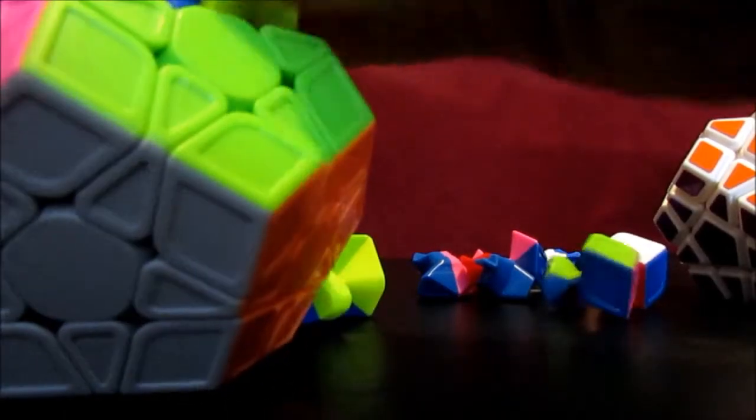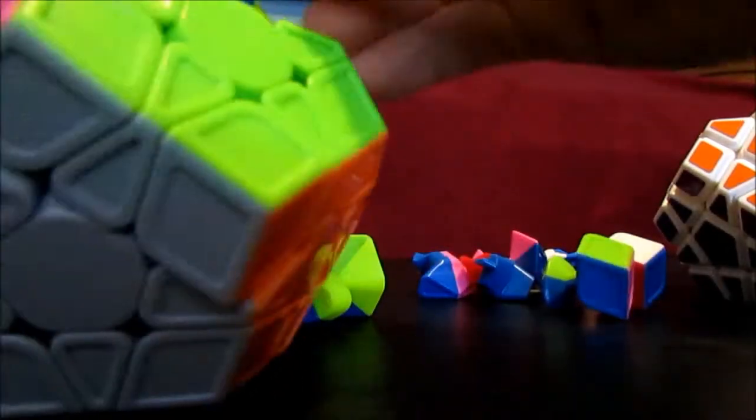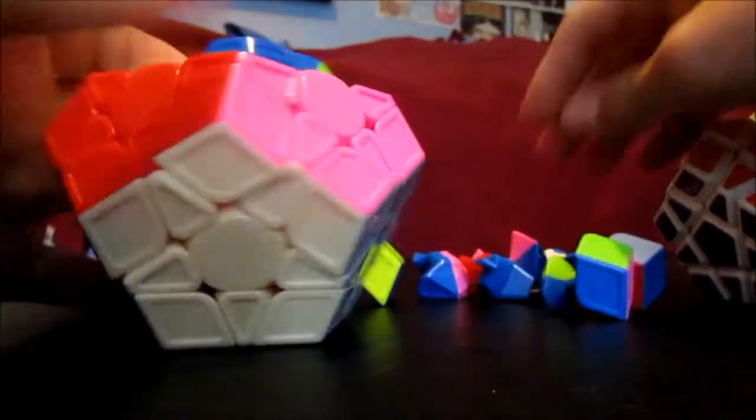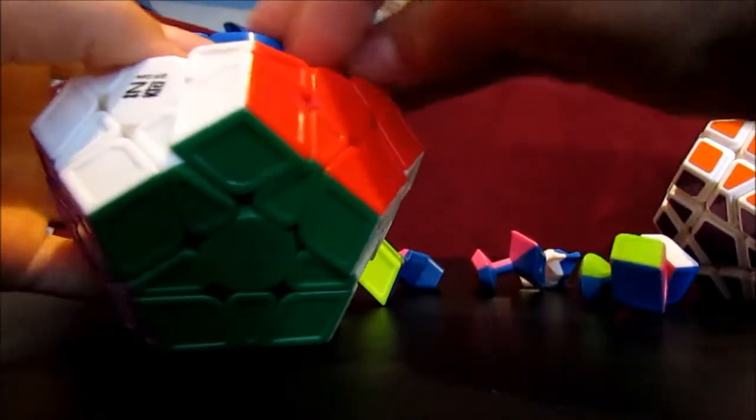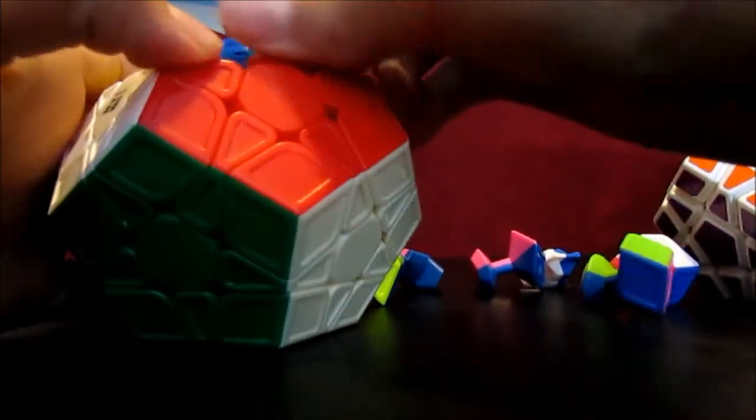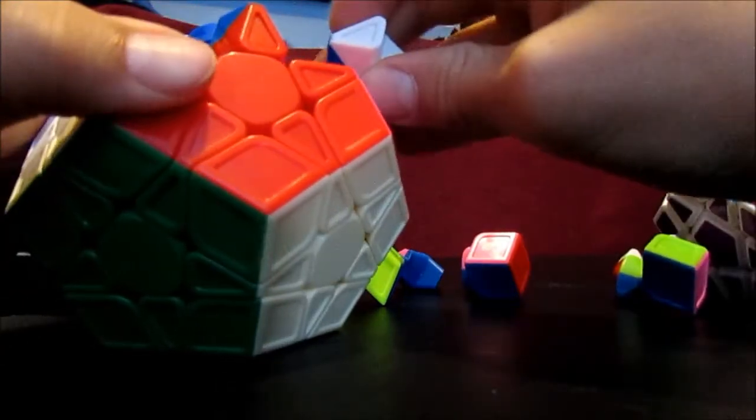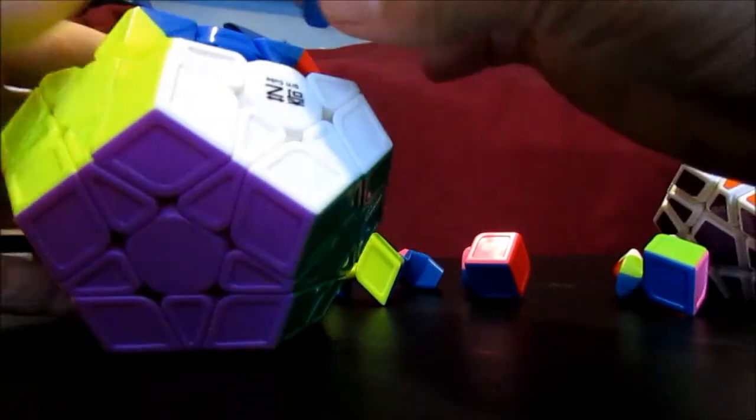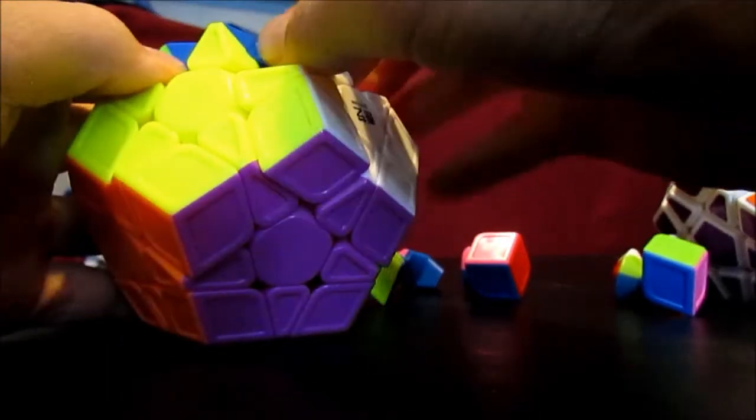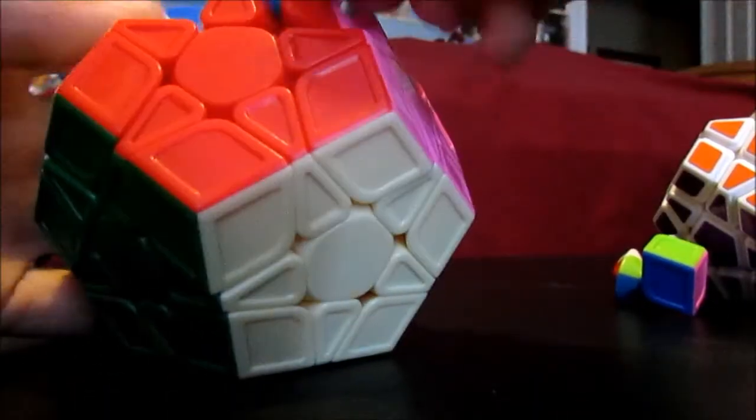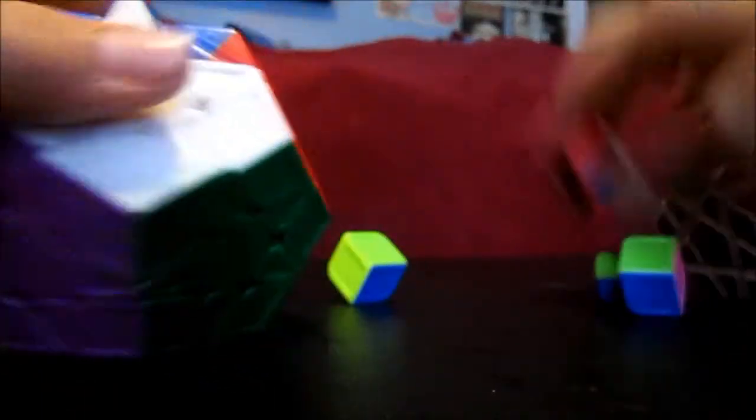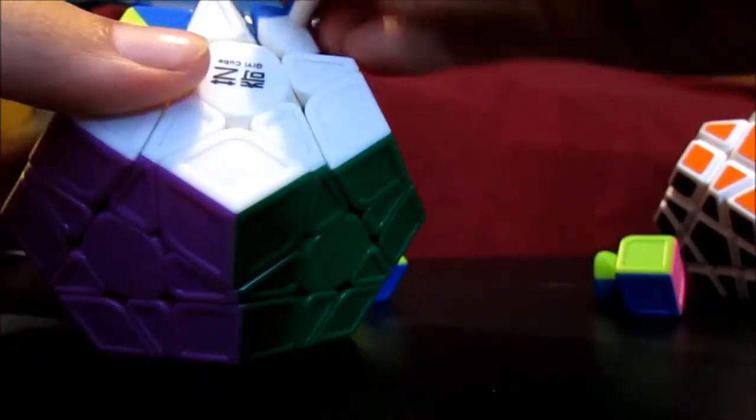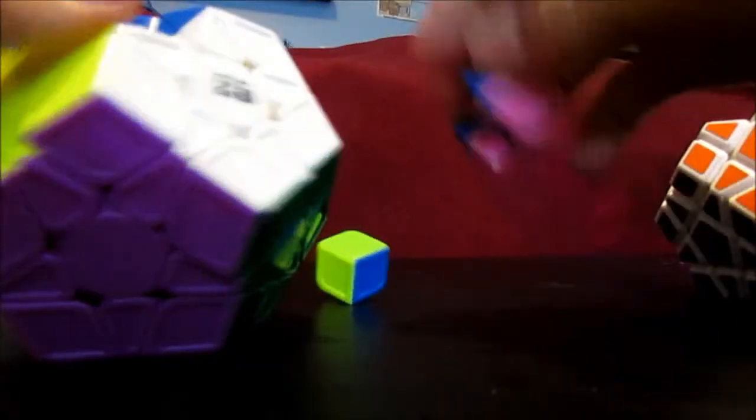Speaking about unboxings, I have recently ordered three new cubes. They're for my collection. So since they're just for the collection, I guess I'll go ahead and tell you the name. One is the Lan Lan 3x3x2, and another one is a Z 1x3x3. So those will both be adding to my Nx3x3 collection. So I'll have a 1x3x3 and a 2x3x3. And finishing off that, I have one more cube. I think, well yeah, I've basically forgotten what it is.